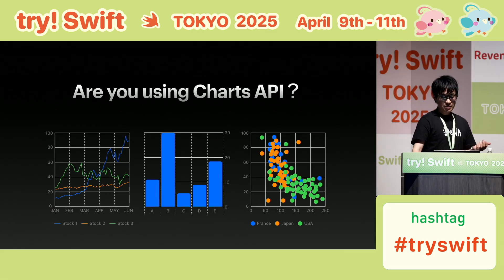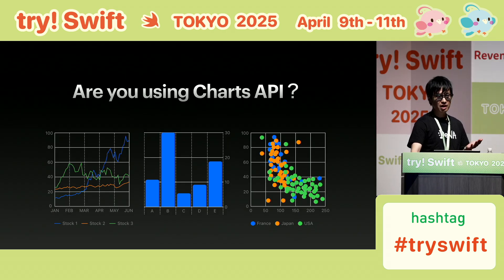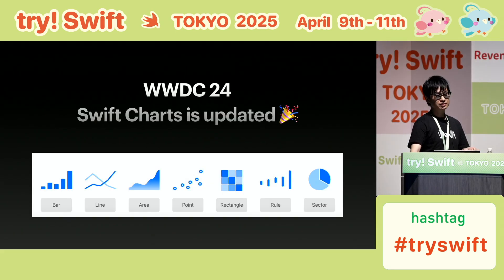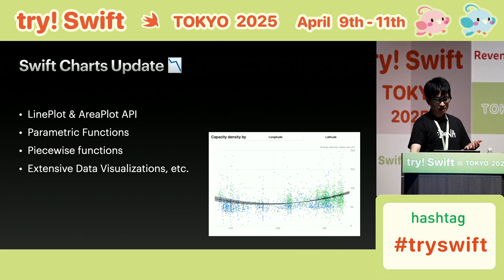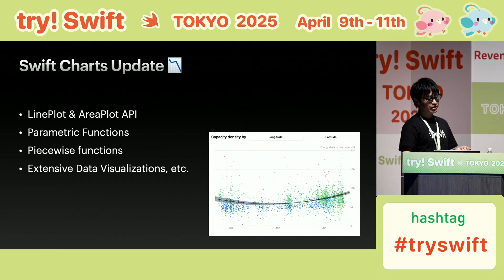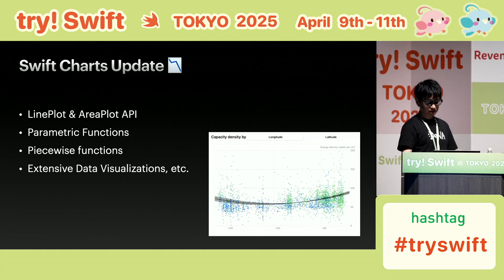How many of you are already using the Charts API? Since its debut at WWDC 22, I'm sure many of you have tried it. At WWDC last year, Charts API got some exciting updates with new features like Curves, Access Control, and even support on macOS. It's more flexible than ever before. Some highlights include line plots and area plots API, parametric functions, piecewise functions, and richer data visualizations. The expressive power of the API has significantly expanded.